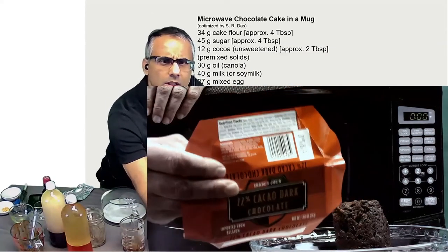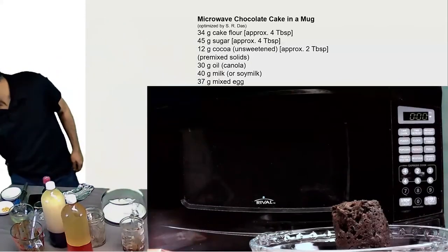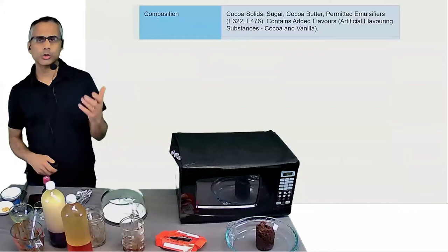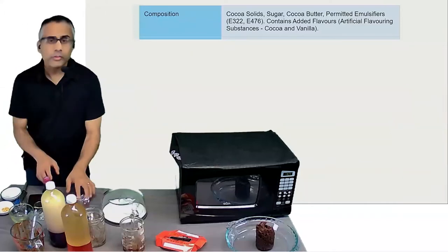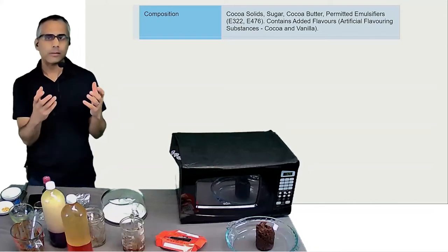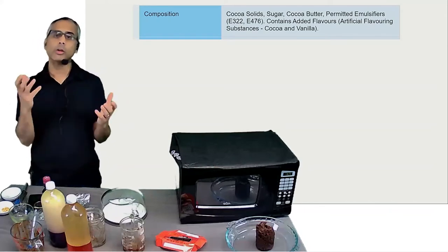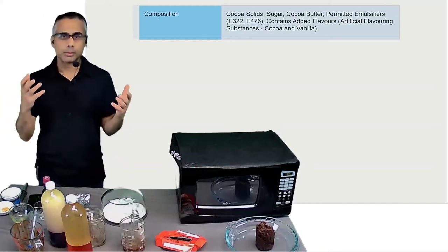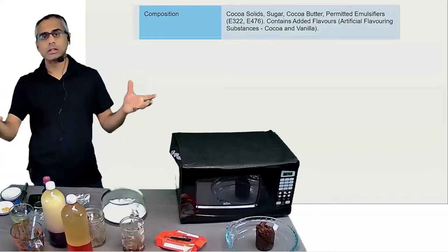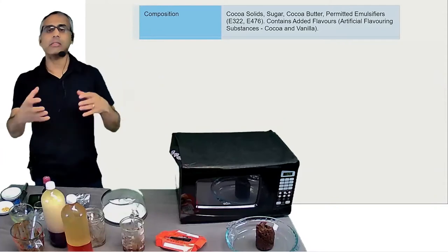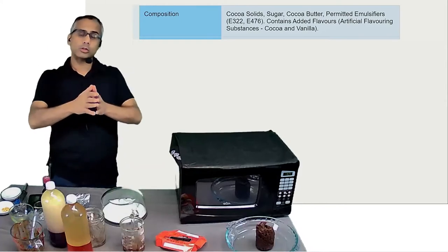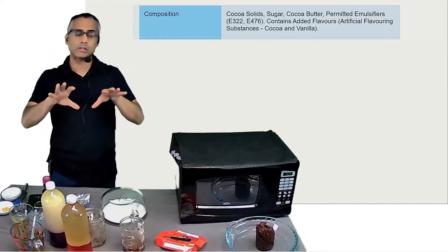A good bar of chocolate has cocoa solids, sugar, and cocoa butter. The percentage — 55% or 75% — refers to the amount of cocoa solids. That's where the bitterness comes from: more cocoa solids means more bitter chocolate. When you have chocolate, it's cocoa butter and cocoa solids mixed back together, and you can control how much of each you include.